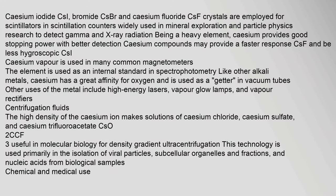Caesium iodide (CsI), caesium bromide (CsBr), and caesium fluoride (CsF) crystals are employed as scintillators in scintillation counters widely used in mineral exploration and particle physics research to detect gamma and X-ray radiation. Being a heavy element, caesium provides good stopping power with better detection efficiency. Caesium vapor is used in many common magnetometers. Like other alkali metals, caesium has a great affinity for oxygen and is used as a getter in vacuum tubes.